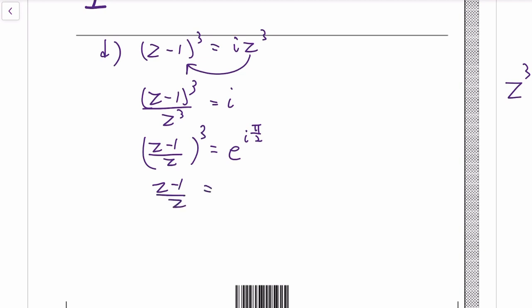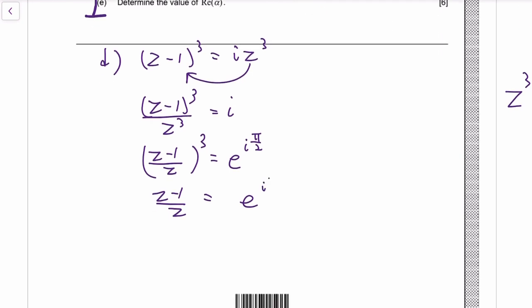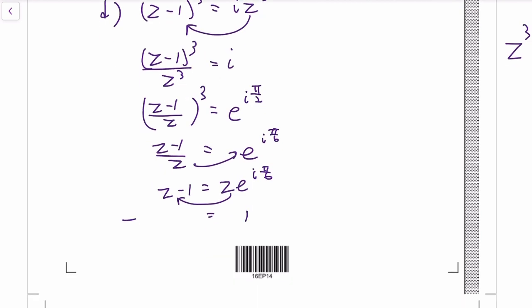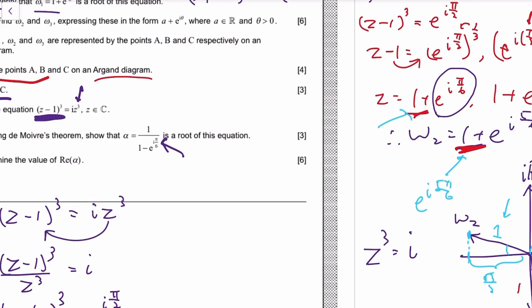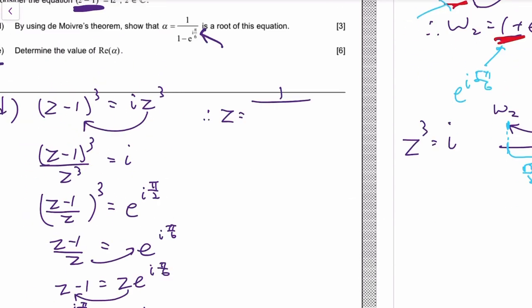Well, at least that's one of the roots. And then we multiply—we make z the subject by multiplying z to the right, and then we'll subtract this to the left while moving one to the right. z minus z e to the i pi over 6—factor out the z—then we divide. We get that.